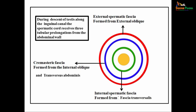The testes develops intra-abdominally. During descent of the testes along the inguinal canal, the spermatic cord also comes down. While it is coming down, it receives three tubular prolongations from the abdominal wall — these are called the coverings of the spermatic cord. The outermost is the external spermatic fascia, formed from the external oblique aponeurosis. In the middle is the cremasteric fascia, derived from the internal oblique and transversus abdominis. And the internal spermatic fascia is formed from the fascia transversalis.